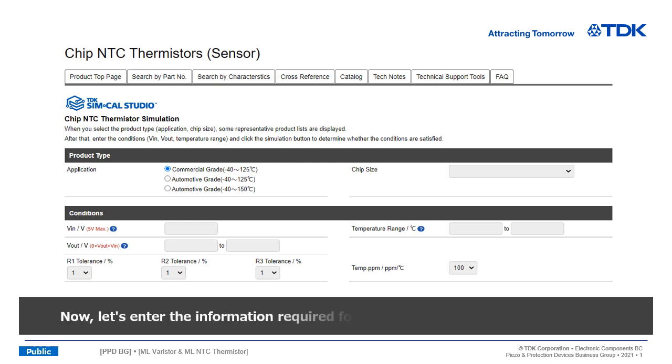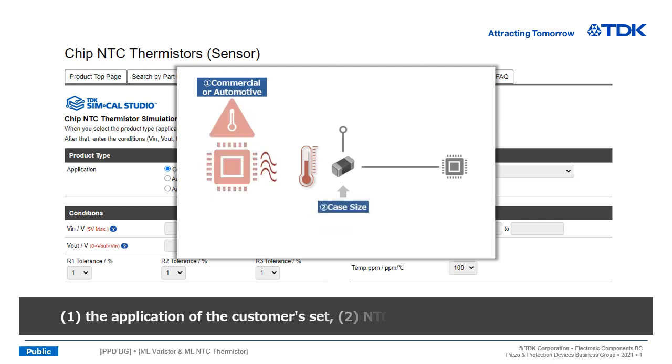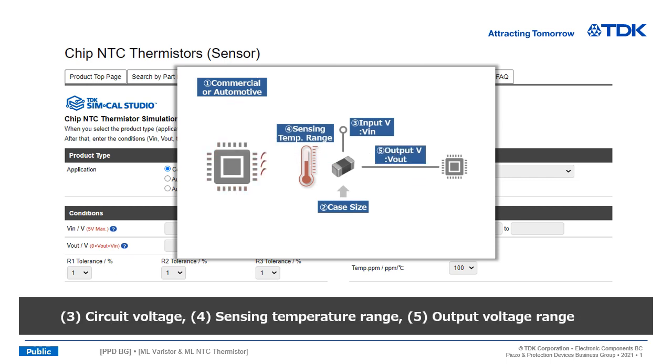Now let's enter the information required for the simulation. We just enter five information for the simulation: 1. The application of the customer set. 2. NTC thermistor case size. 3. Circuit voltage. 4. Sensing temperature range. 5. Output voltage range.